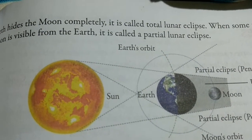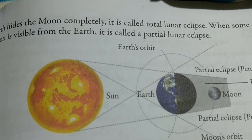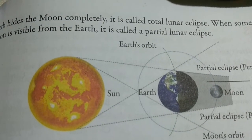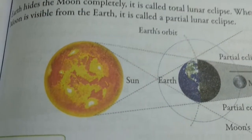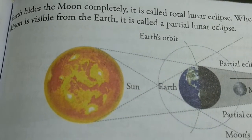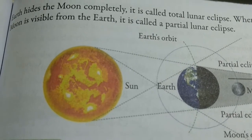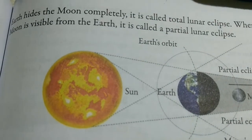The word lunar means moon. When we cannot see the whole moon at all, it is a total lunar eclipse. When only some part of the moon is visible from the earth, it is called a partial lunar eclipse.